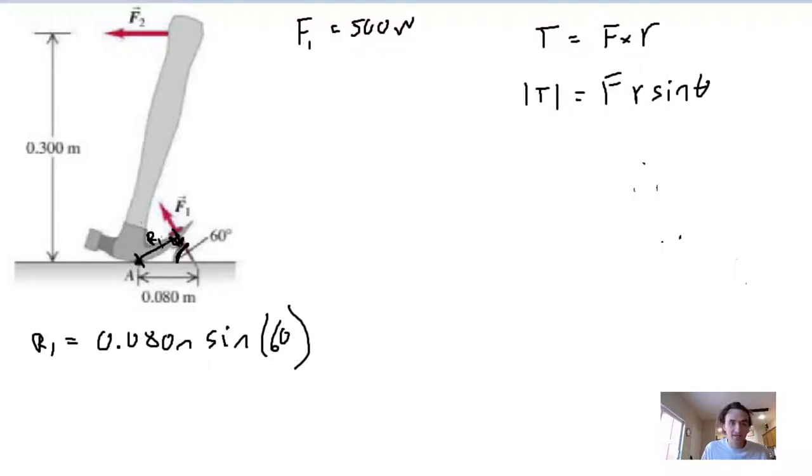The torque because of force one, torque one, will equal force one times radius one, which is 0.080 meters times sine of 60. Then we want to set that equal to this torque two, which is the result of force two.